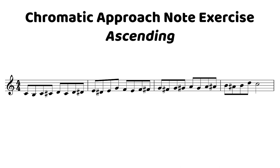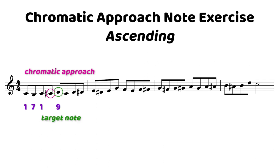Let's take a look at the ascending version of this exercise. You can see that we start on a scale degree, we move down a step, and then we move back up to the scale degree, and then we have that chromatic approach note in between that leads up to the next scale degree. That next scale degree is our target note. As we can see, moving your eyes across the page, we have scale degrees on beats one and three as we move through this exercise.